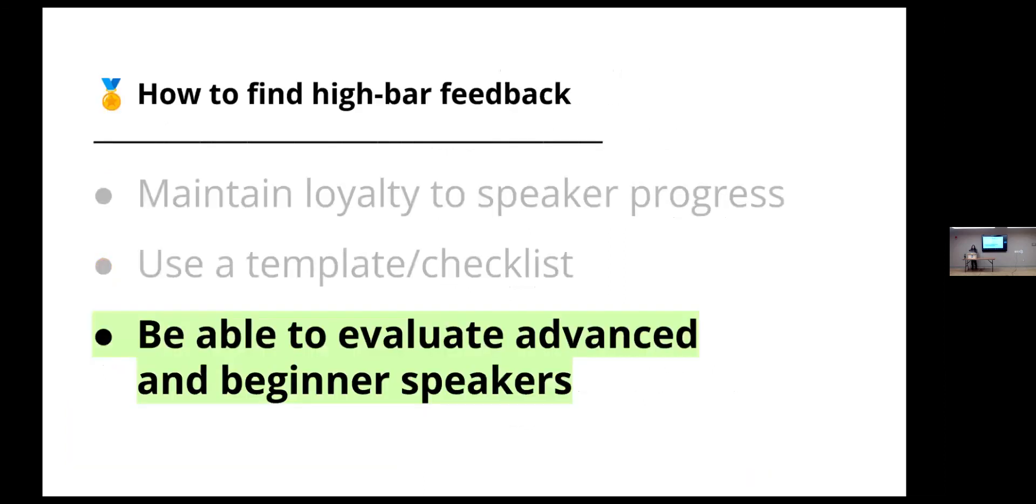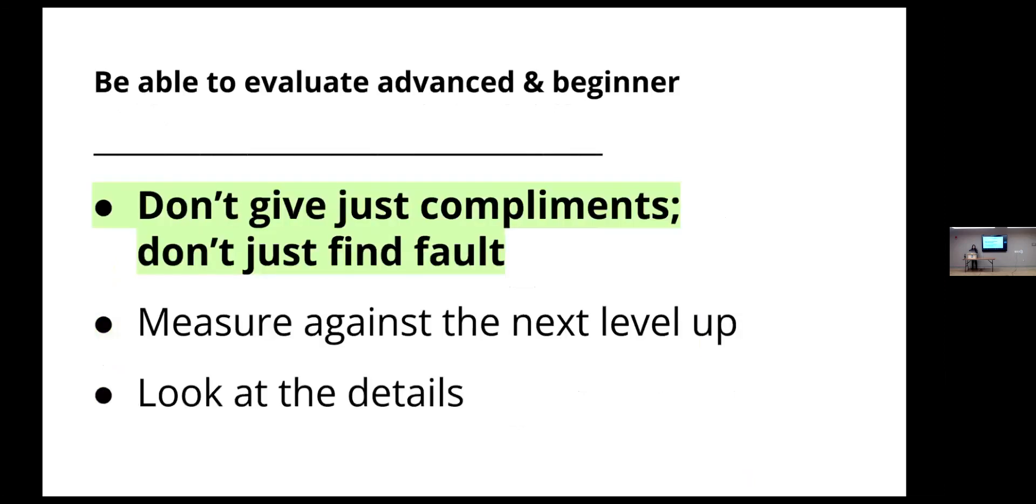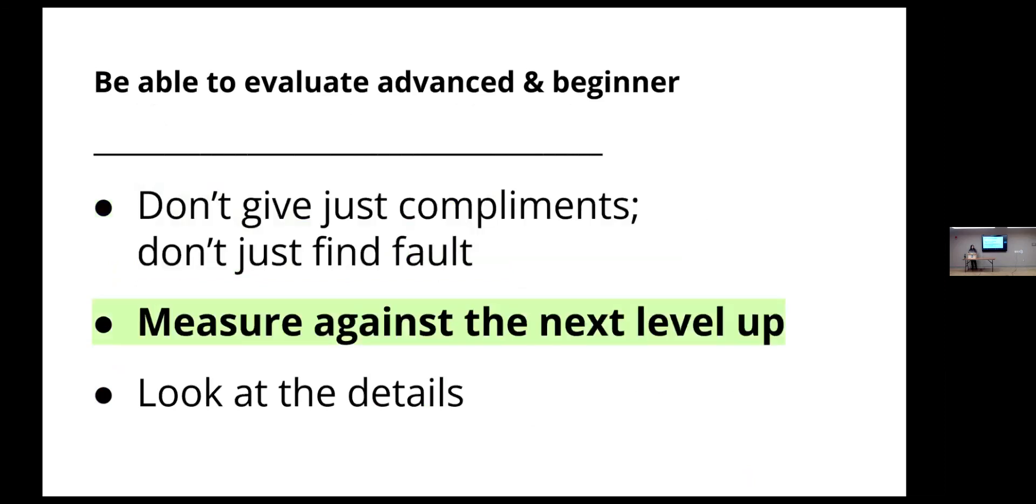Now the last part, to find high bar feedback, you need to be able to evaluate both advanced and beginner speakers. Here, the first principle I use is to remember your job is not just to give compliments or just to find fault. Speakers at all levels need to know what they can improve on or try in the future. And they also need to know what they should keep doing or keep building on. So you're going to need to be able to identify multiple positives and multiple improvements for any given speech. I assure you, you can do this because you know what's possible.